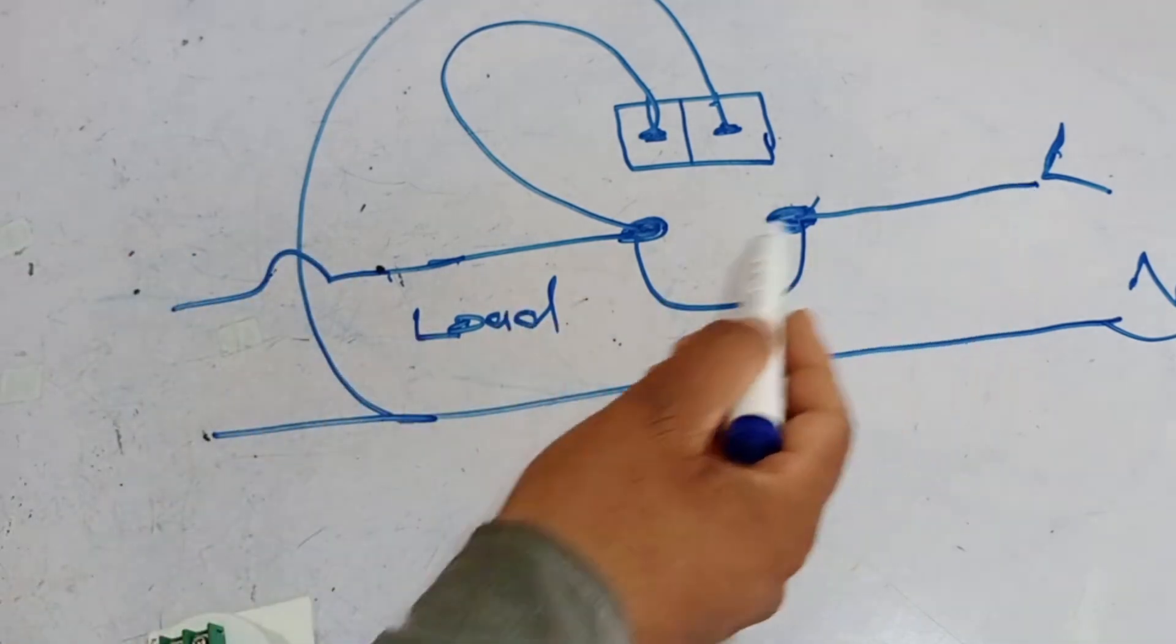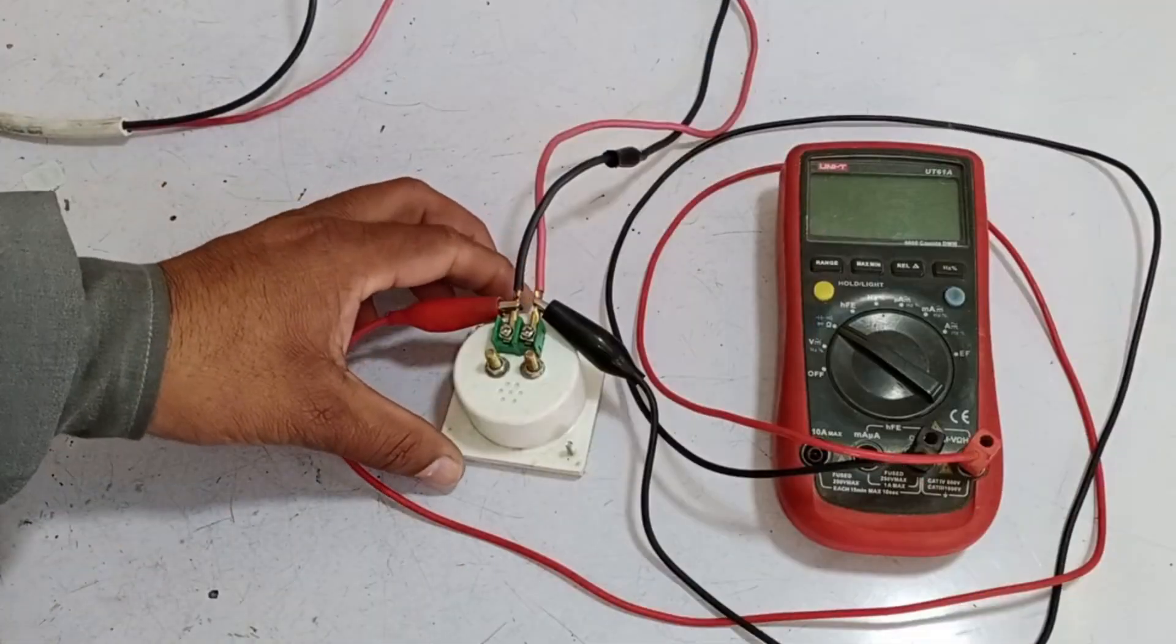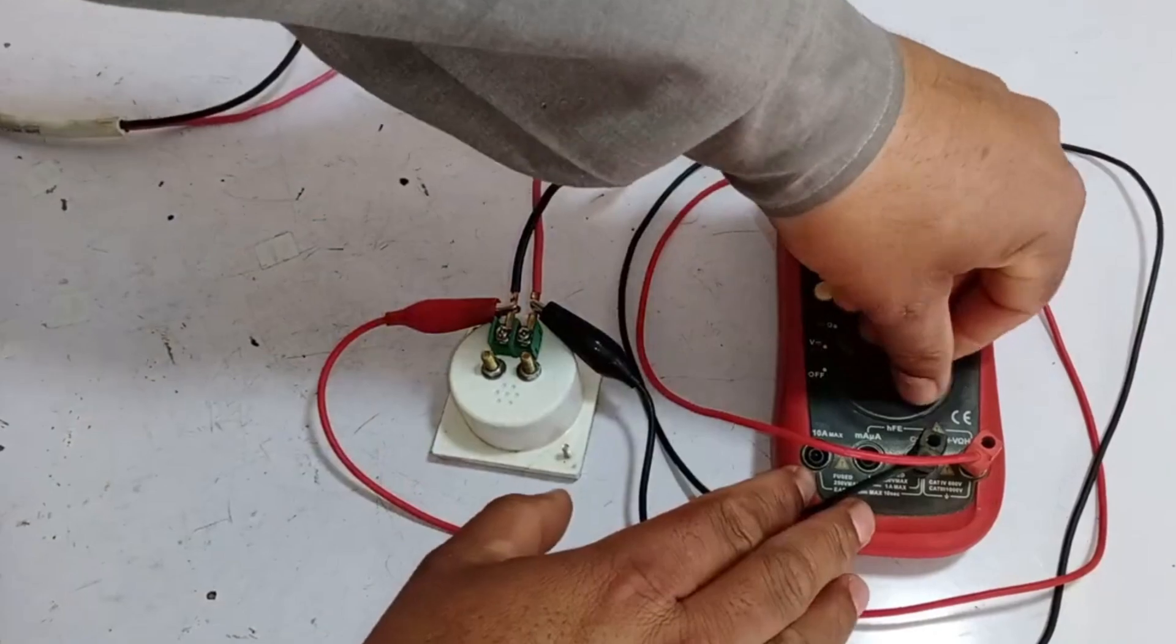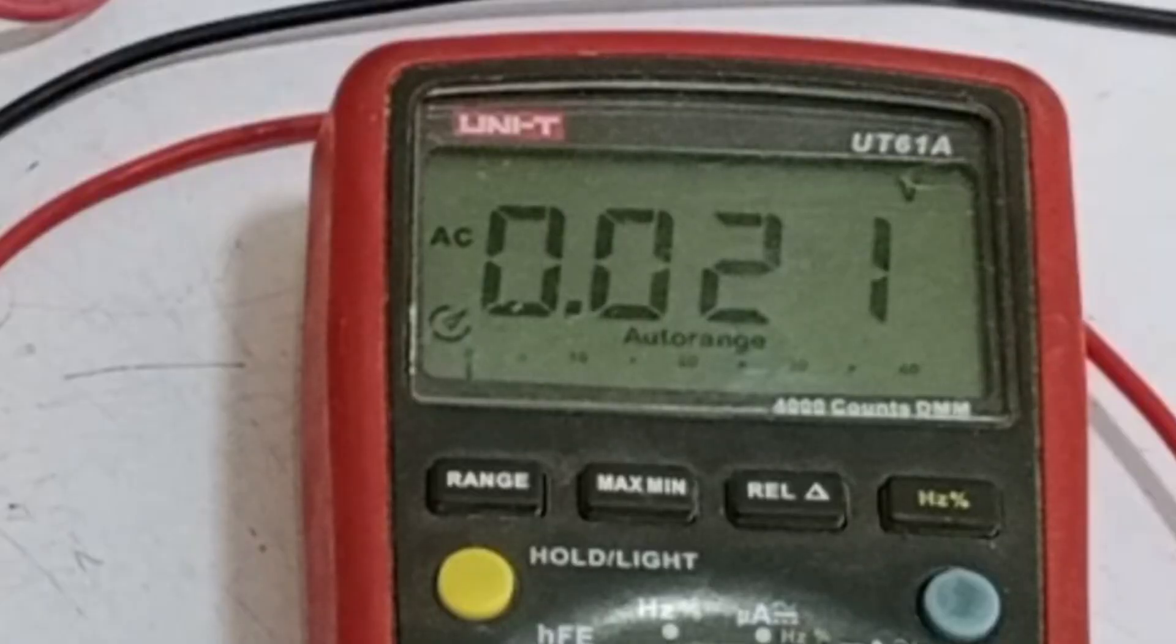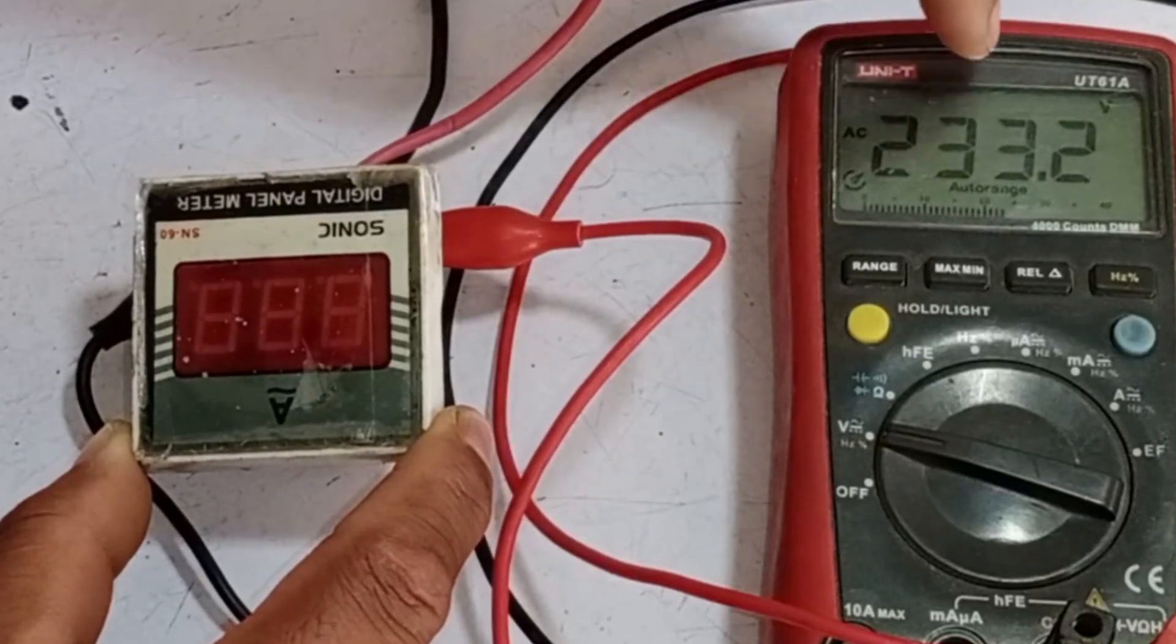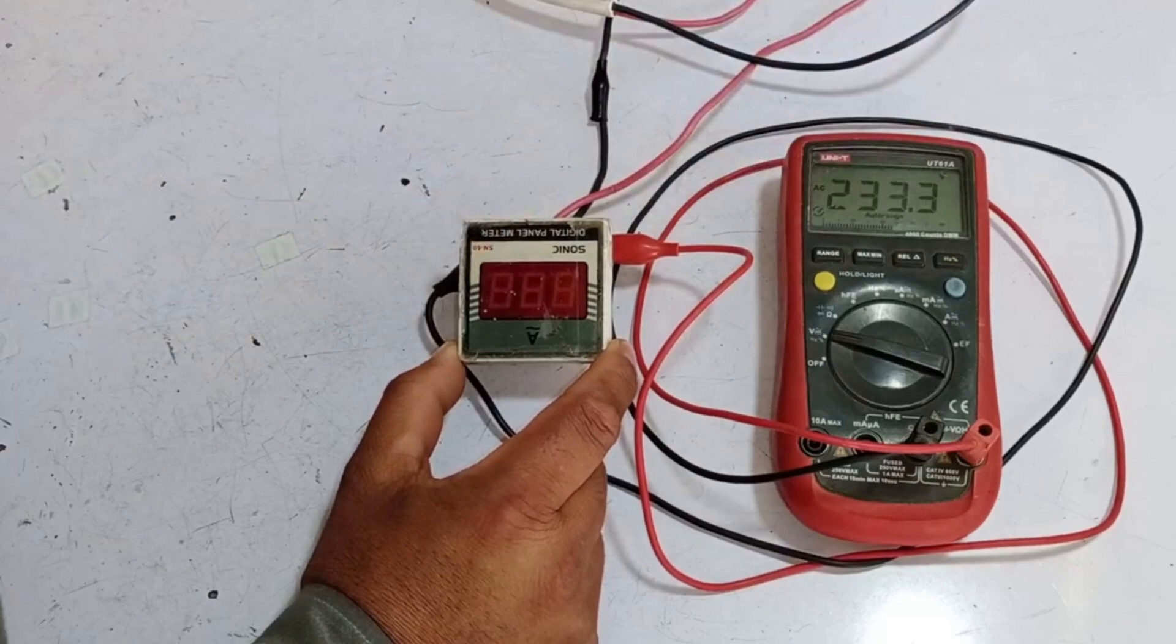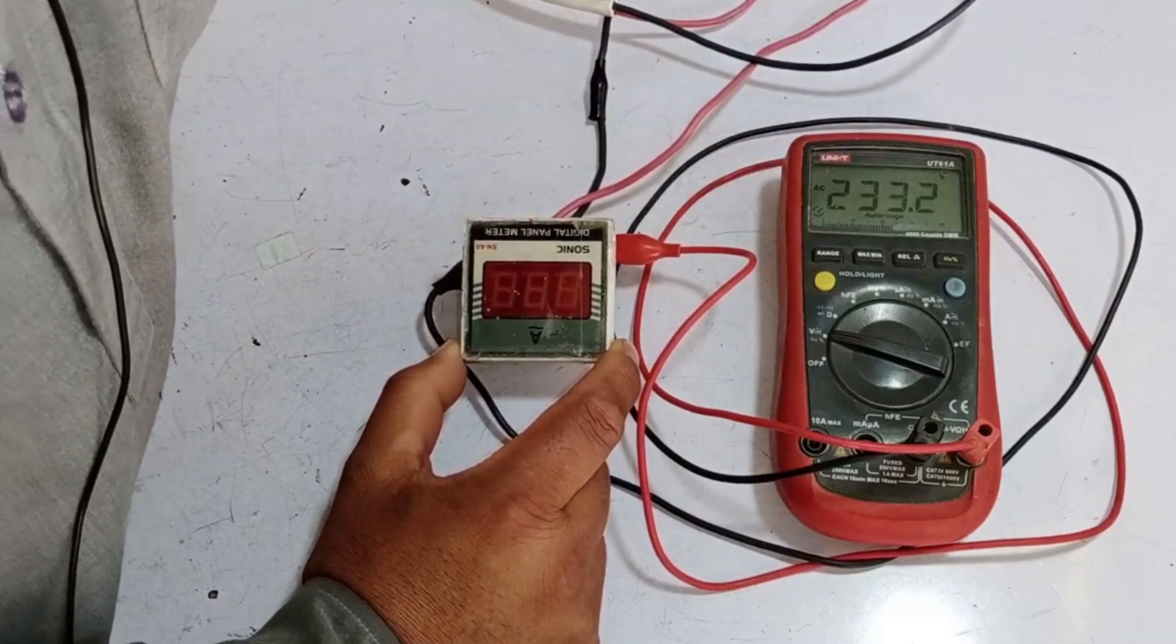However, it's recommended to connect the line here for better results. Now, we'll show you that this meter is not working at all. Look, we've connected the multimeter and set it to AC mode. The power supply has been turned on, and you can see 233 volts are present, but the ammeter is not turning on. So now we'll repair it and show you the complete process of how it's repaired.